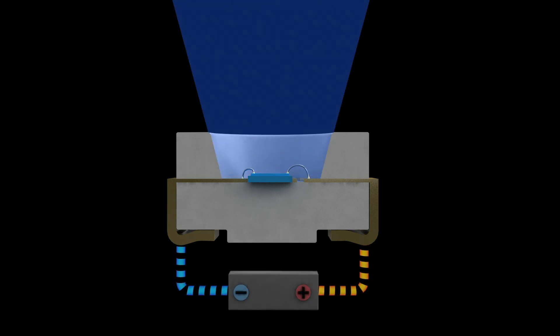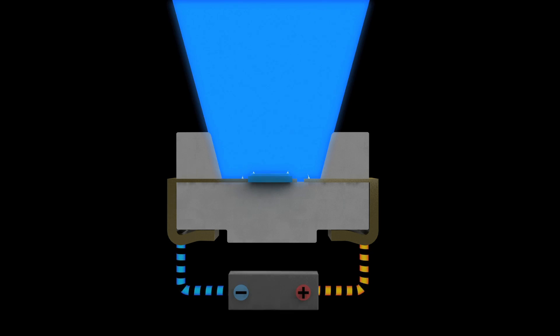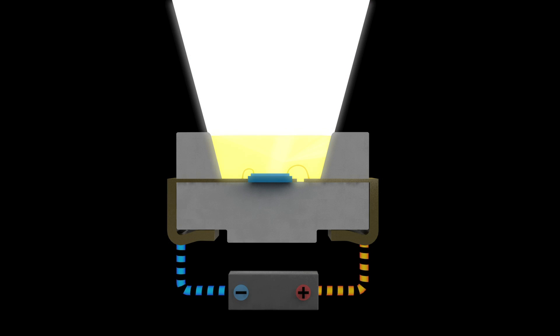Untouched, the raw chip lights blue. The addition of silicon and phosphor layers converts this to a bluey, cool white or amber-colored warm white.